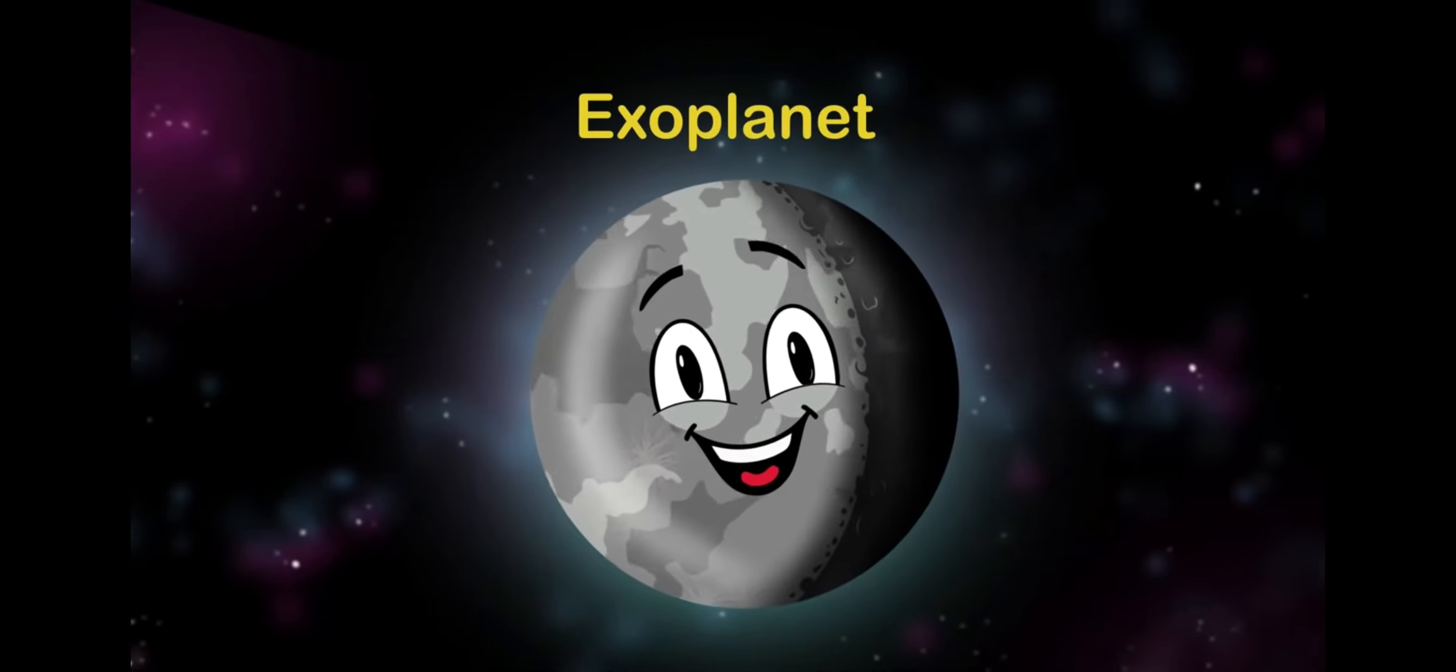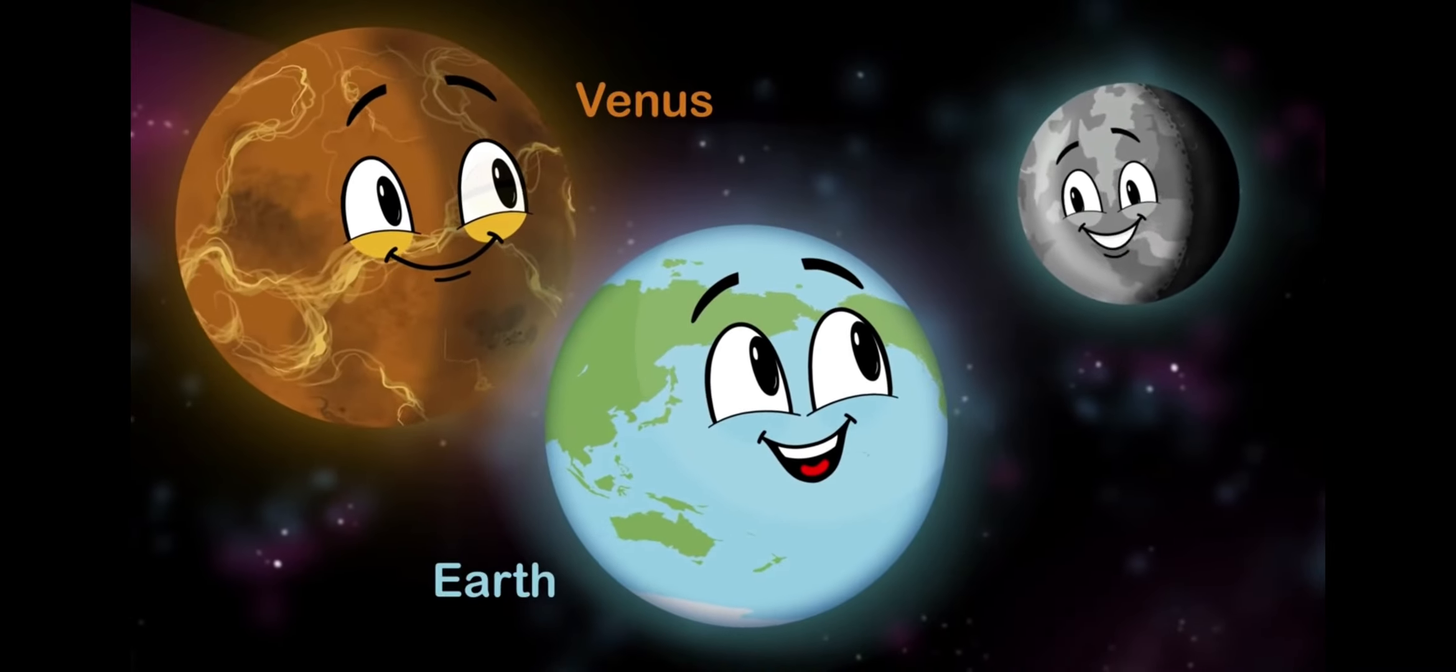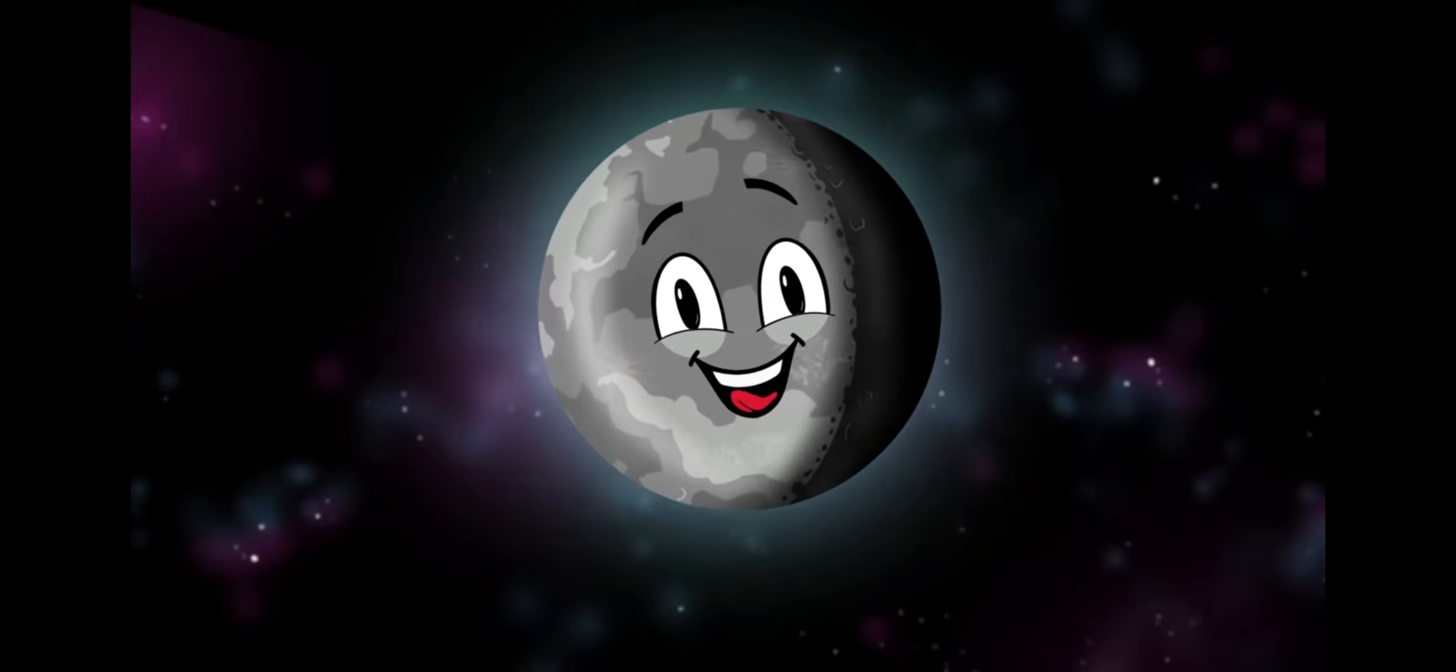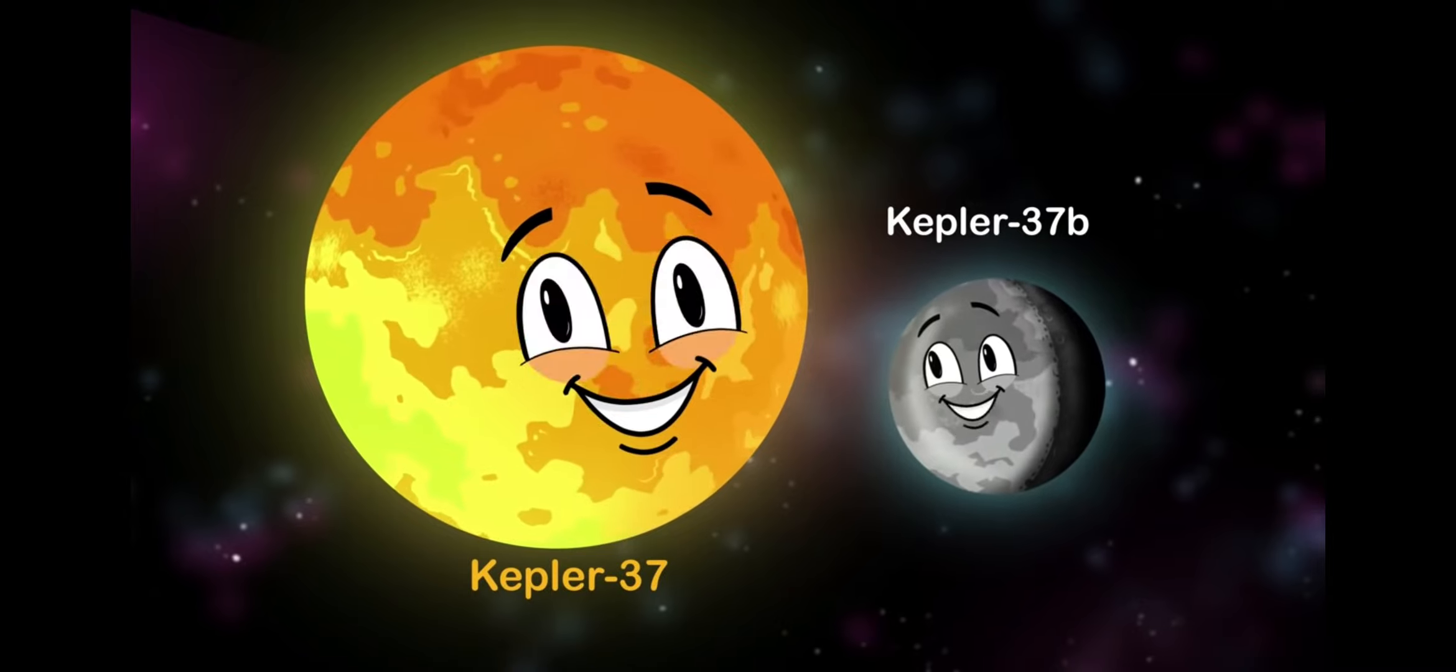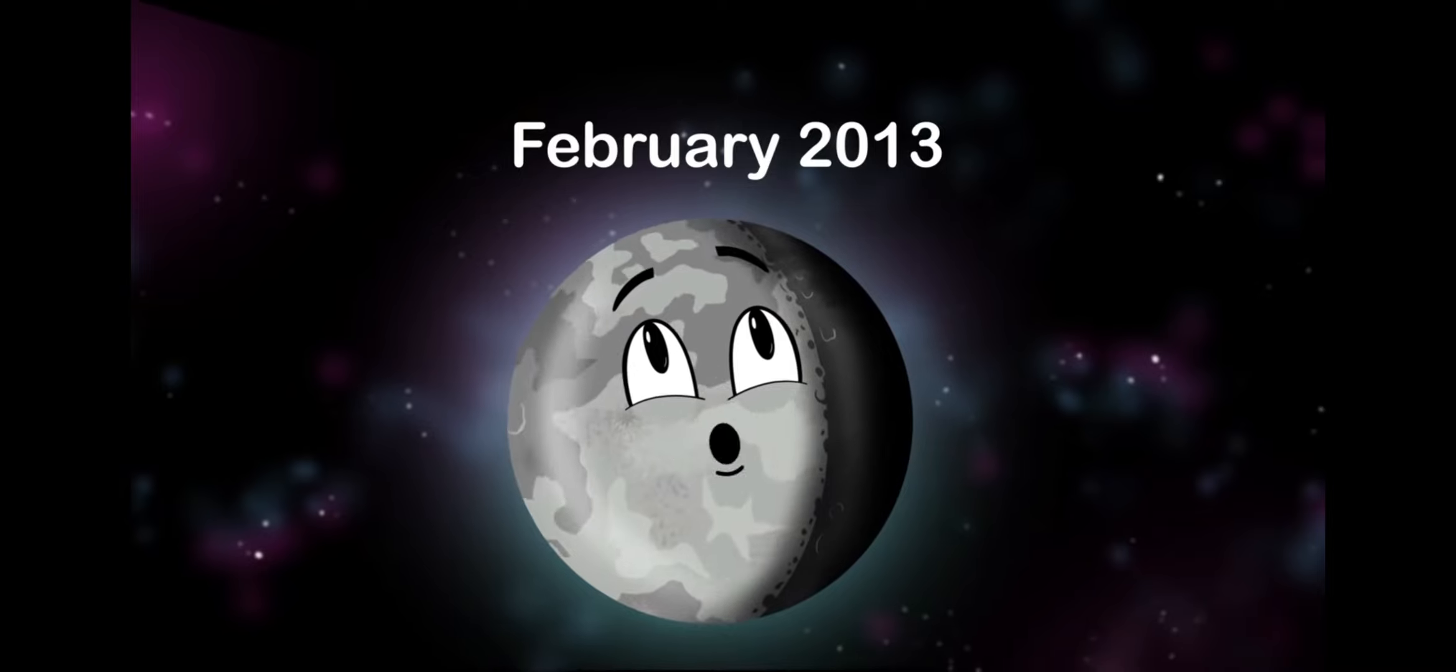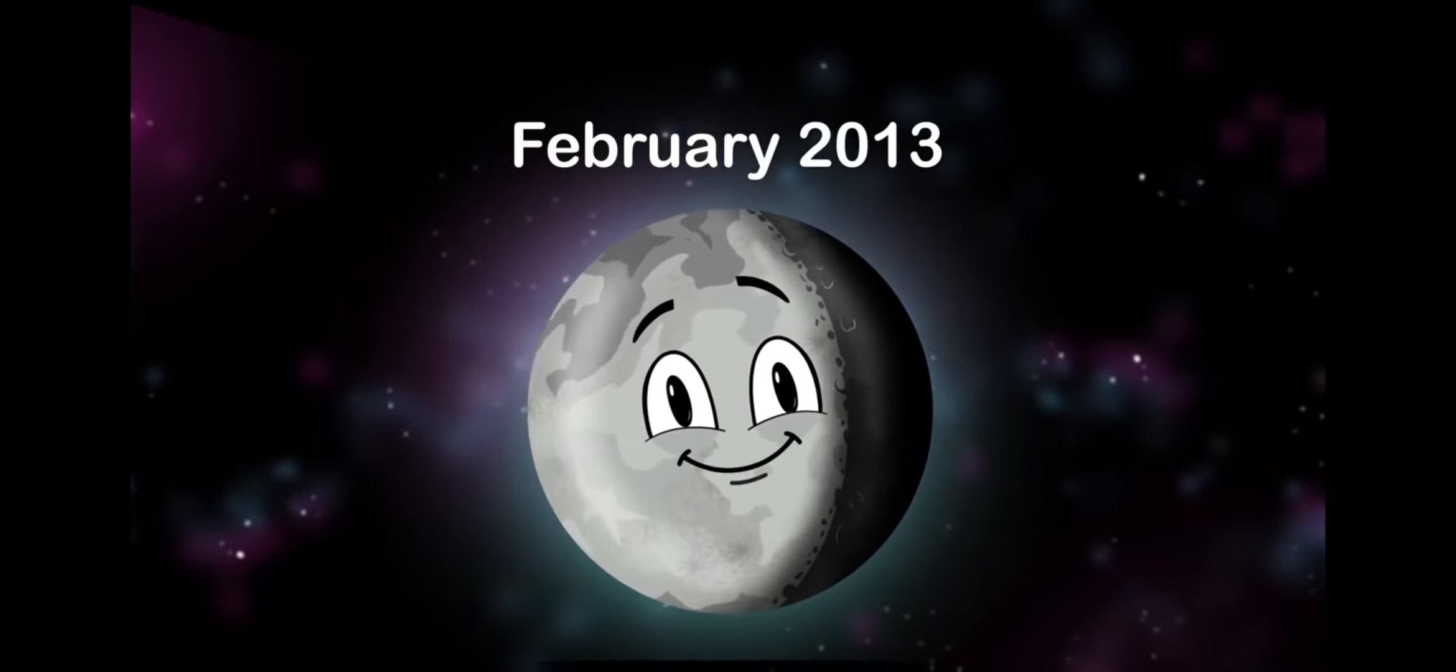I'm classified as an exoplanet, also a sub-Earth. This means that I'm substantially less massive than Venus and Earth. I'm an extrasolar planet called Kepler-37b, orbiting Kepler-37. That's my host star, you see. I was discovered in the month of February in 2013. Now let's learn more about me.